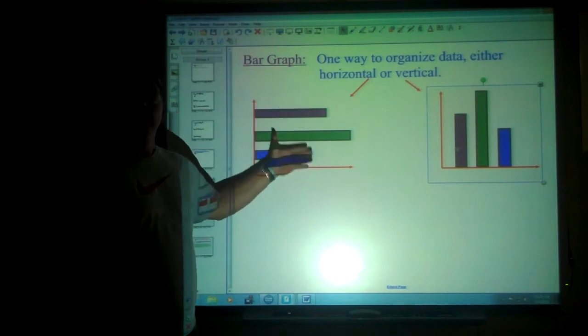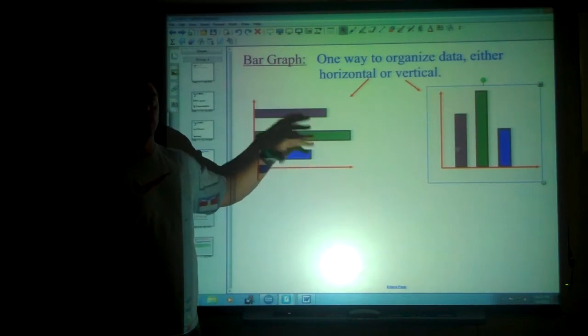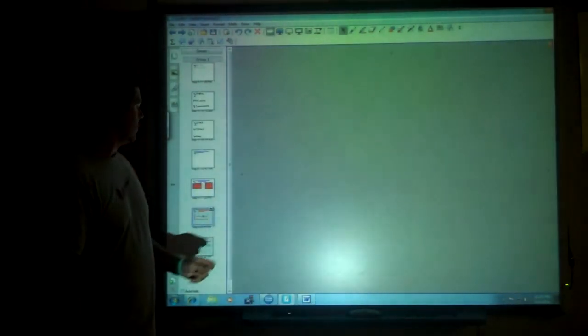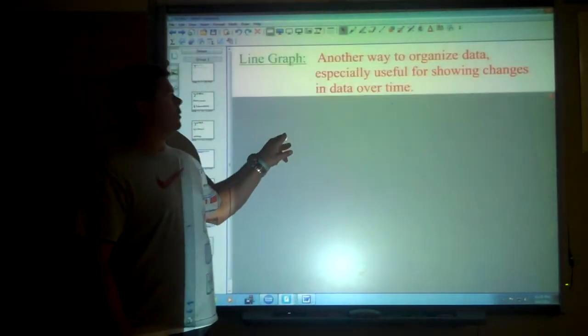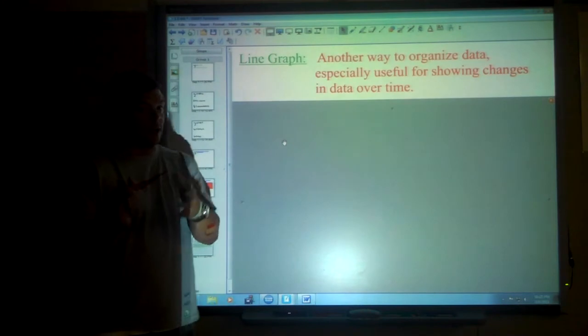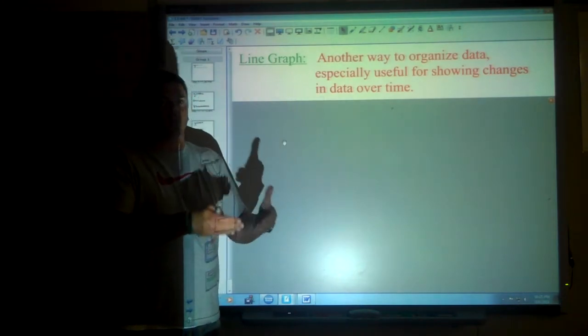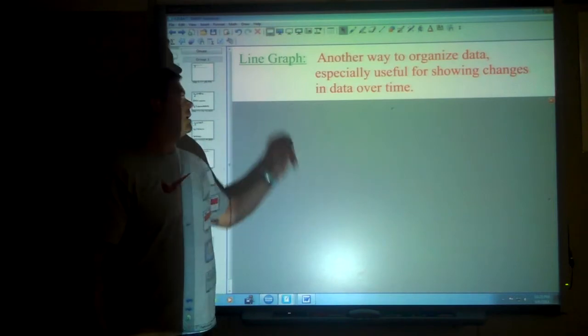You can still do some things to make each one look a little bit different. But again, these are very useful for comparing different objects, different items to each other. Because you can relatively easily decipher which one's bigger, smaller, less, more, etc. But we also have another version, which is a line graph. So again, another way to organize the data.